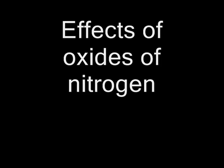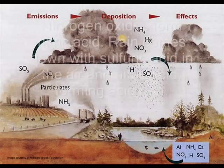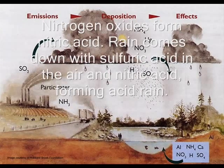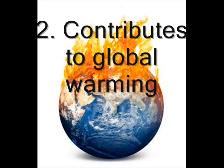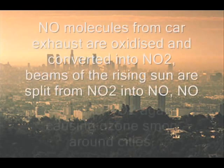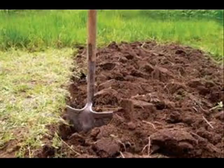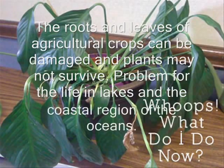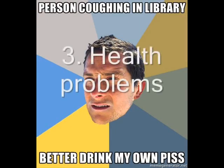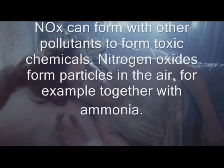Effects of nitrogen oxides: First, they form acid rain — sulfuric and nitric acid from nitrogen oxides form acid in rain. Second, global warming — oxidation of nitric oxide forms nitrogen dioxide, and the splitting of nitrogen dioxide back to nitric oxide contributes to ozone smog. Third, they hamper plant growth — damaged roots, leaves, lakes, and coastal regions may kill plants and cause ecological problems. Fourth, health problems — oxides of nitrogen can form other toxic materials like ammonia, causing health issues.